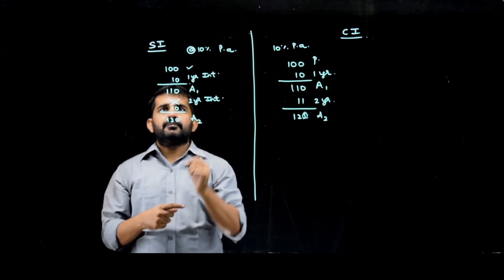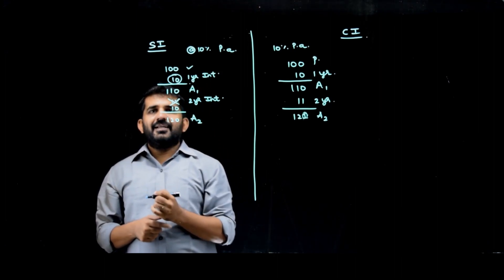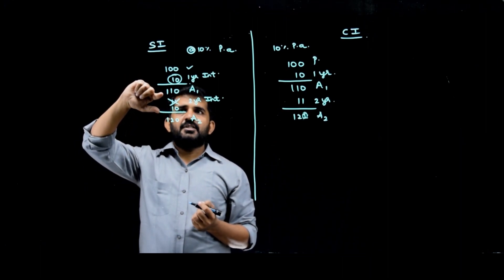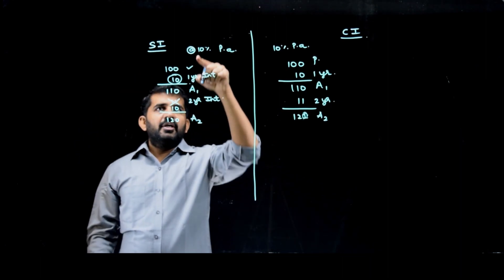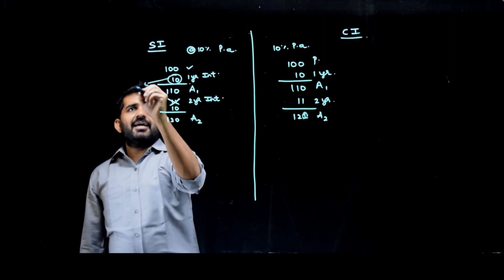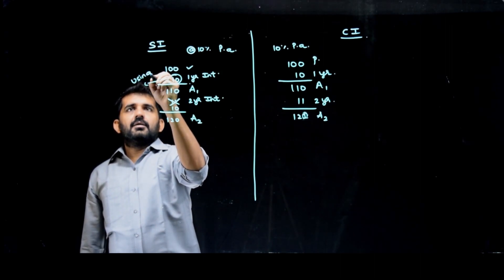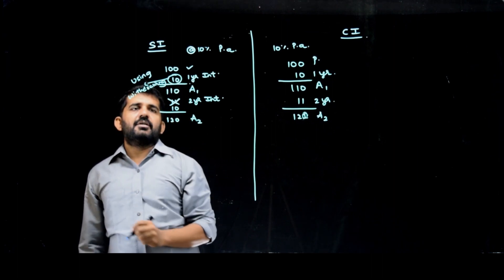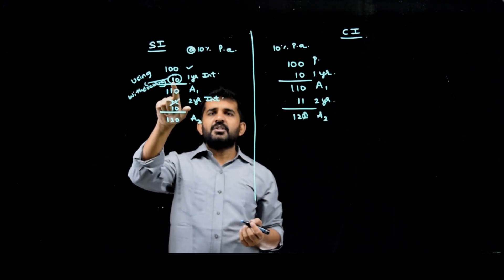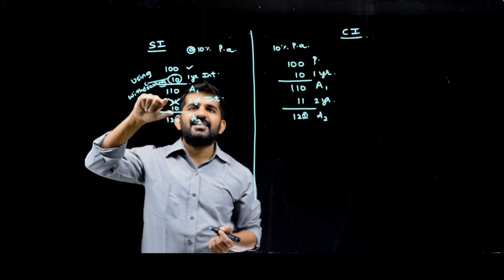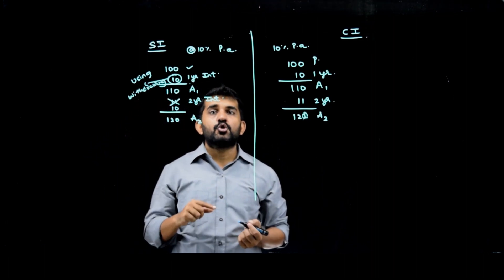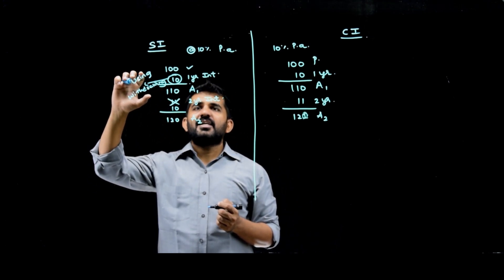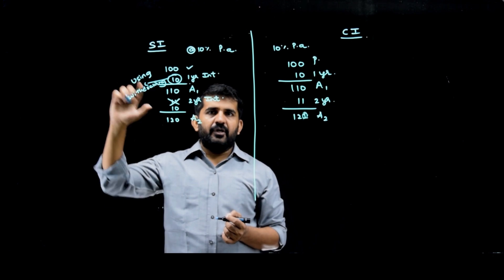I invest 100 rupees. I get 10 rupees as interest. Have I invested 110 after first year? The answer is no. In simple interest, normally I am using this, basically I am withdrawing this interest. Now if I withdraw this interest, what is invested in second year is only 100, and so I am not getting interest on 110 rupees, I am getting only on 100 rupees. Because I have used it, I have withdrawn it.